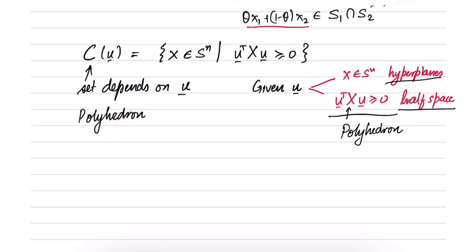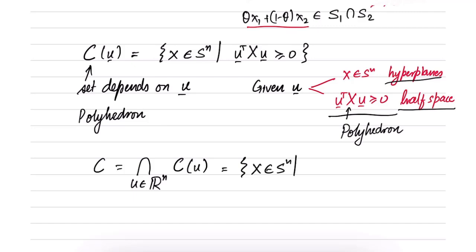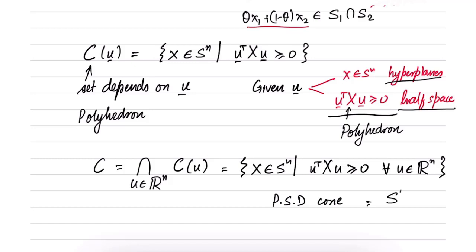Now consider the set C equal to the intersection over all U in R^n of C(U). We are considering an intersection of infinite such sets indexed by U. This set consists of all symmetric matrices such that U-transpose X U >= 0 for all U in R^n. This set is the positive semi-definite cone, also called S^n_+, and we know it is convex.